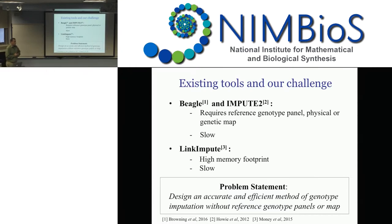We have a recent paper looking at finding structural variation where our method is as good as other methods, but we have a new algorithmic formulation using a graph structure. Finding the structural variation is 100 times faster. So it's not necessarily that we have better results — it's as good as the other tools — but we can do it much, much faster with our new formulation. The idea is that will help others use the formulation and improve their methods.